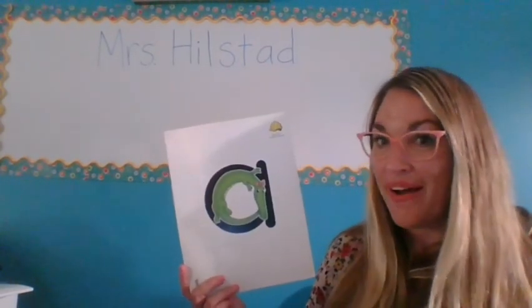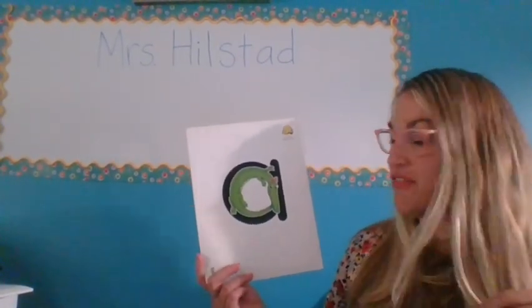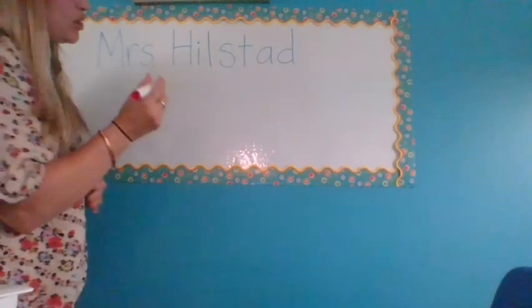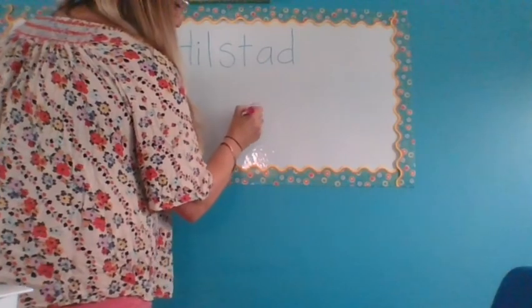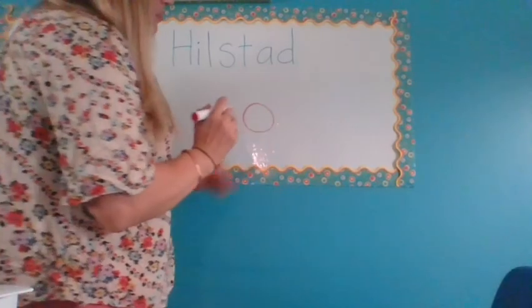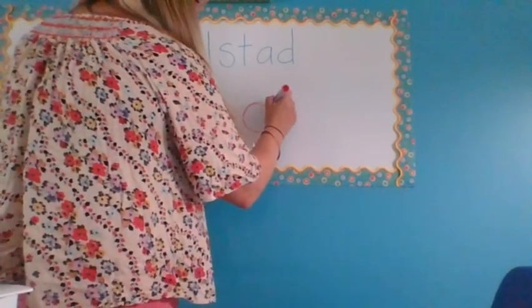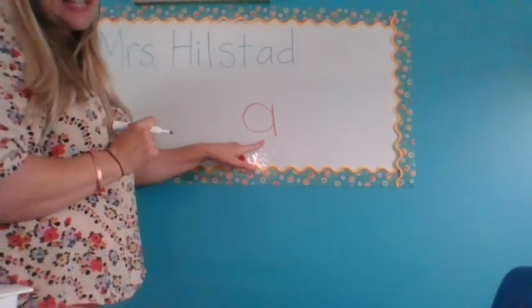So we're going to talk about how to write the letter A. Allie Alligator is in the shape of a lowercase a, so we're going to start with that first. To make a lowercase a, you're going to start with a circle shape — I'm going to make a little circle, just like that. And then down the back of the circle, I'm going to make a little line straight down. And that is our lowercase a.